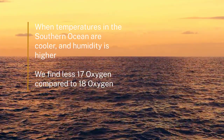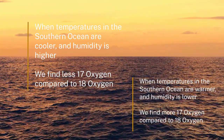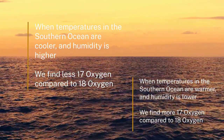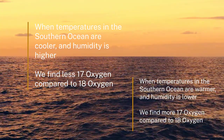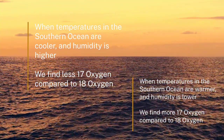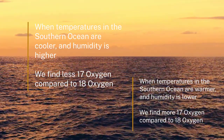On the other hand, when temperatures in the Southern Ocean are a little bit warmer than usual and humidity is a little bit lower than usual, we get a little bit more 17 oxygen compared to 18 oxygen. By measuring the changes in the amount of 17 oxygen compared to 18 oxygen in our ice core records, we're able to reconstruct these changes in temperature and humidity in the Southern Ocean.